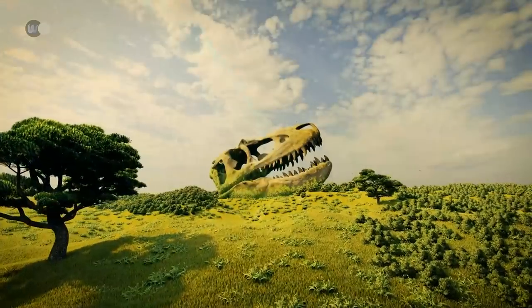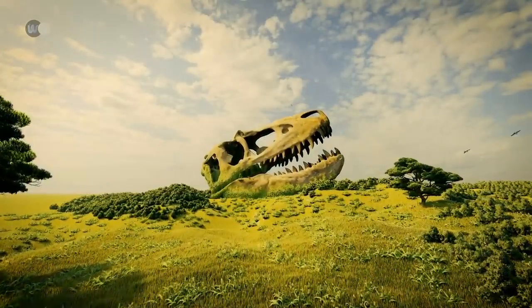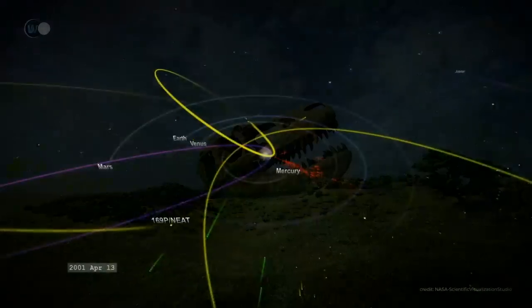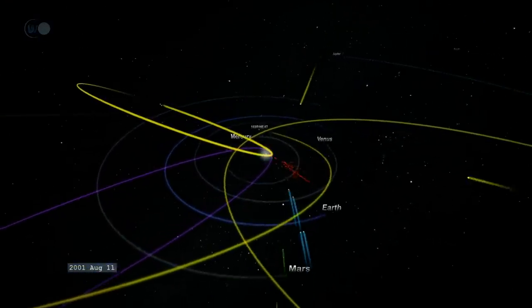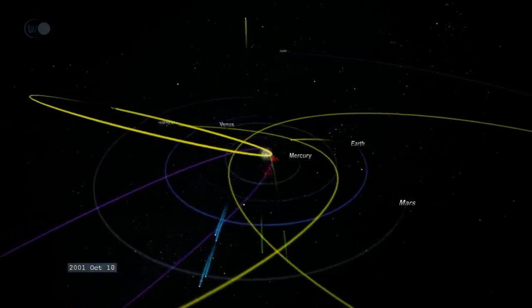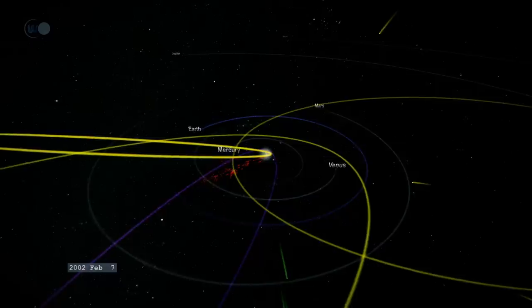The non-avian dinosaur mass extinction of 65 million years ago comes to mind. Based on this frequency, we may be able to suggest that a good number of comets could reach our beautiful planet before long. But let's not see this as apocalyptic.